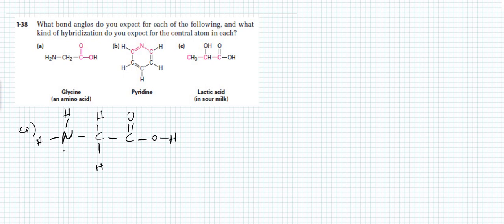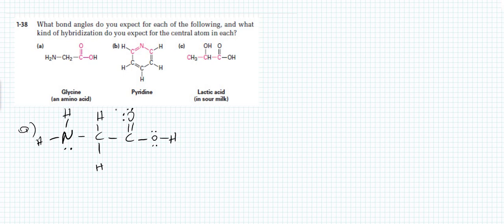The next thing you need to do is fill in the lone pair electrons. Nitrogen has two, four, six valence electrons around it and according to the octet rule it should have eight electrons, so we place one lone pair on nitrogen. This carbon fulfills its octet, and this other carbon has two, four, six, eight electrons. We place two lone pairs on this oxygen so it fulfills its octet, and the last oxygen also gets two lone pairs to have eight electrons around it.